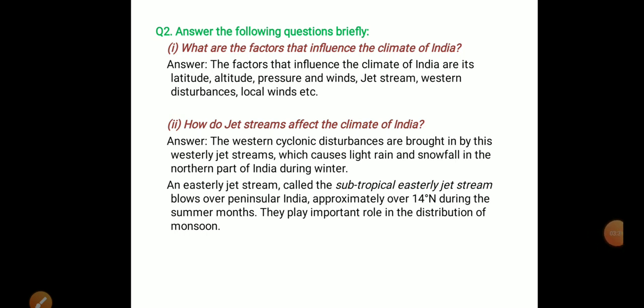Question number two: Answer the following questions briefly. What are the factors that influence the climate of India? The factors that influence the climate of India are its latitude, altitude, pressure and winds, jet streams, western disturbances, local winds, etc.